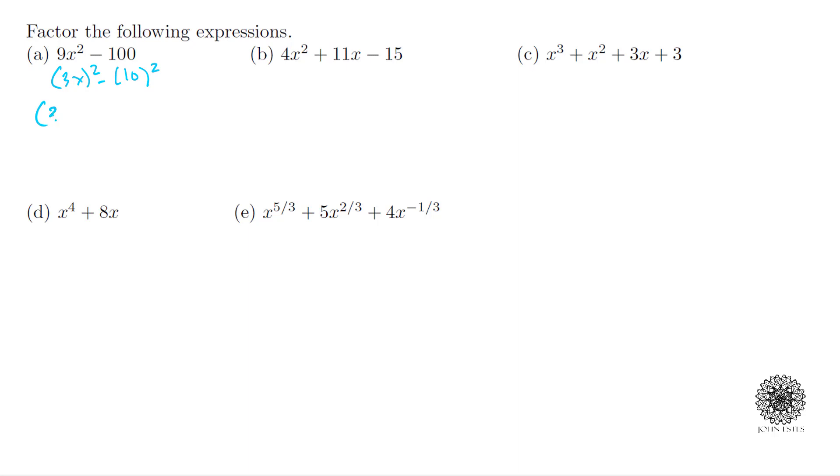Using the common factor formula, the difference of squares, that's (3x - 10)(3x + 10), and there it is, it's factored.